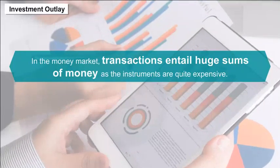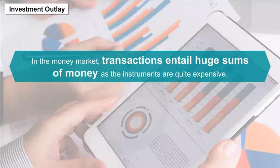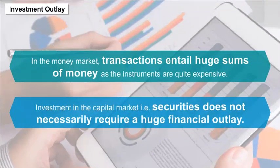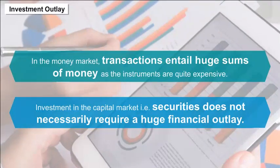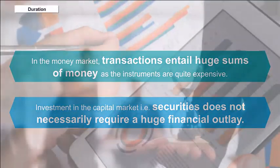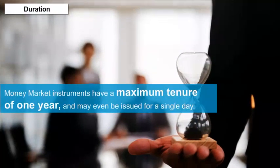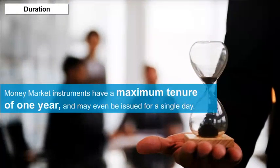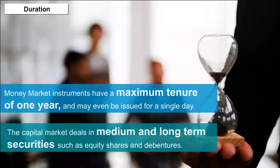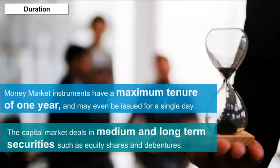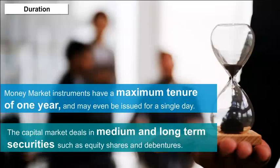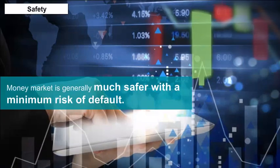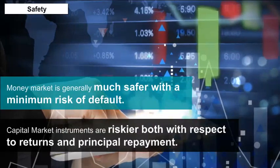Investment outlay — in the money market, transactions entail huge sums of money as the instruments are quite expensive. Investment in the capital market, that is, securities, does not necessarily require a huge financial outlay. Duration — money market instruments have a maximum tenure of one year and may even be issued for a single day. The capital market deals in medium and long-term securities such as equity shares and debentures.